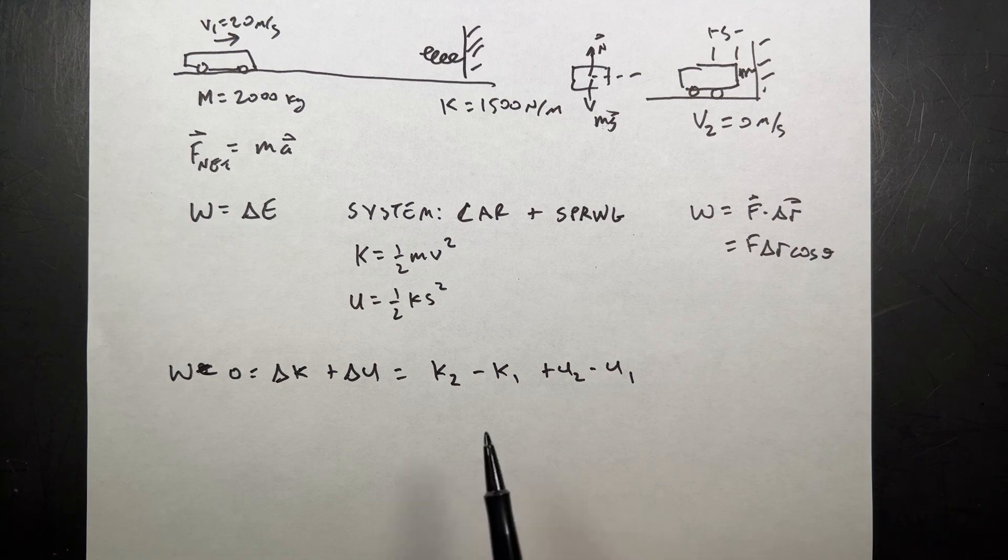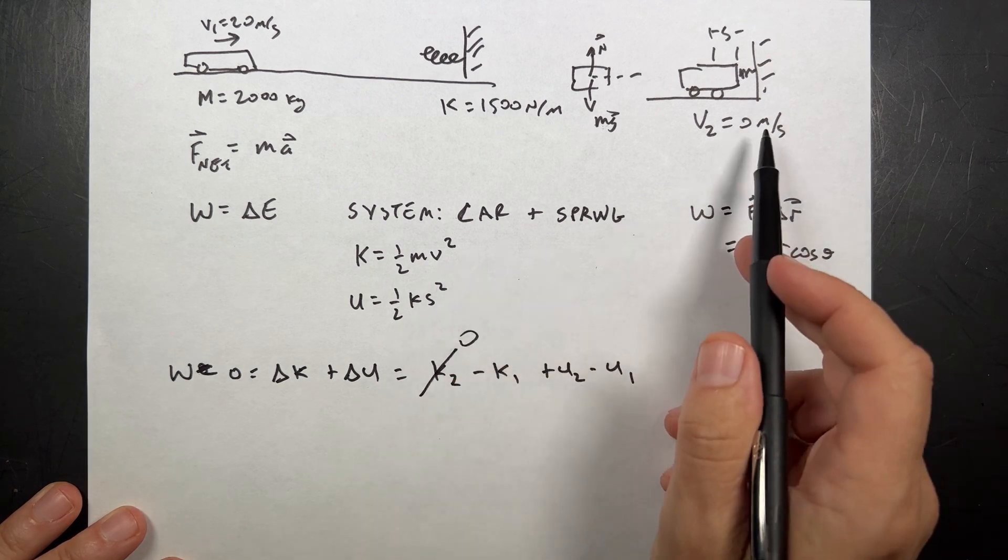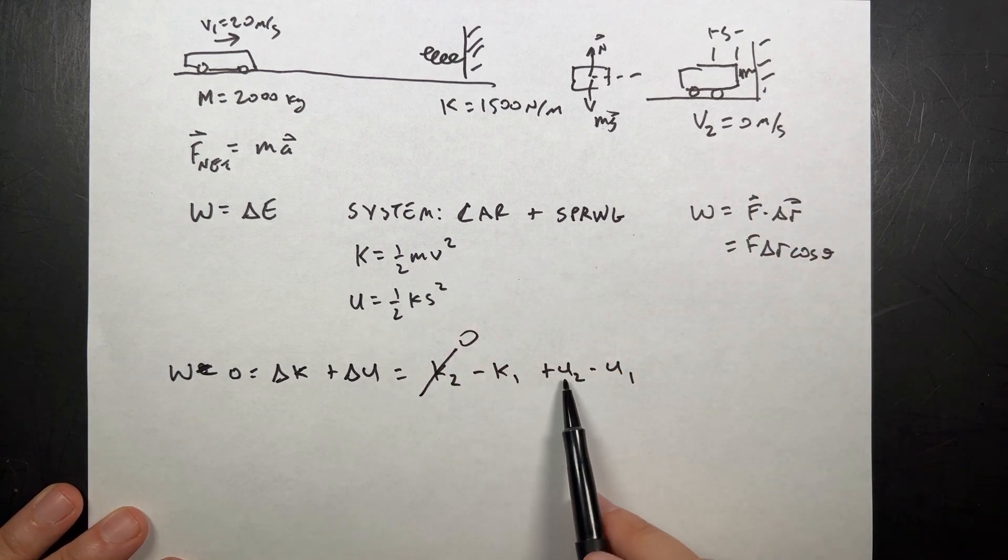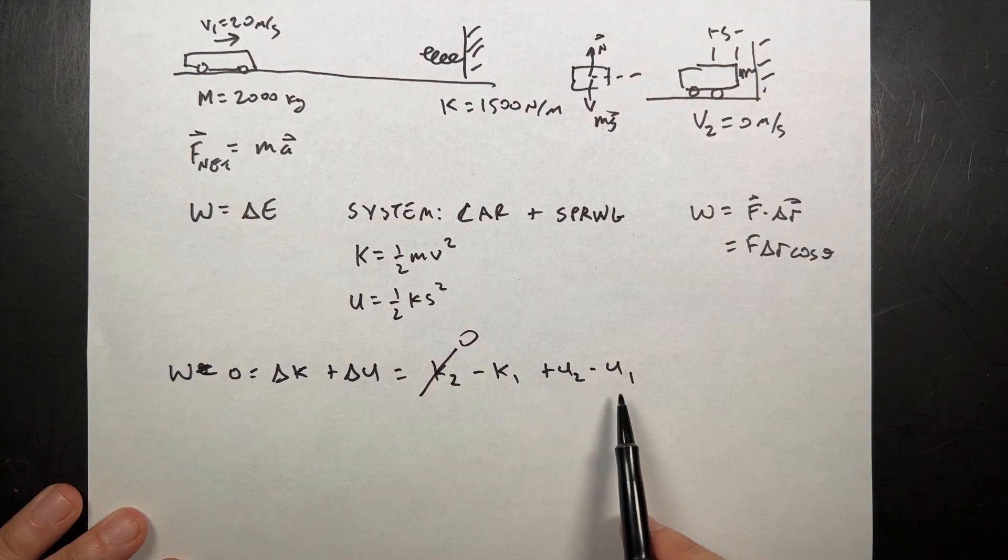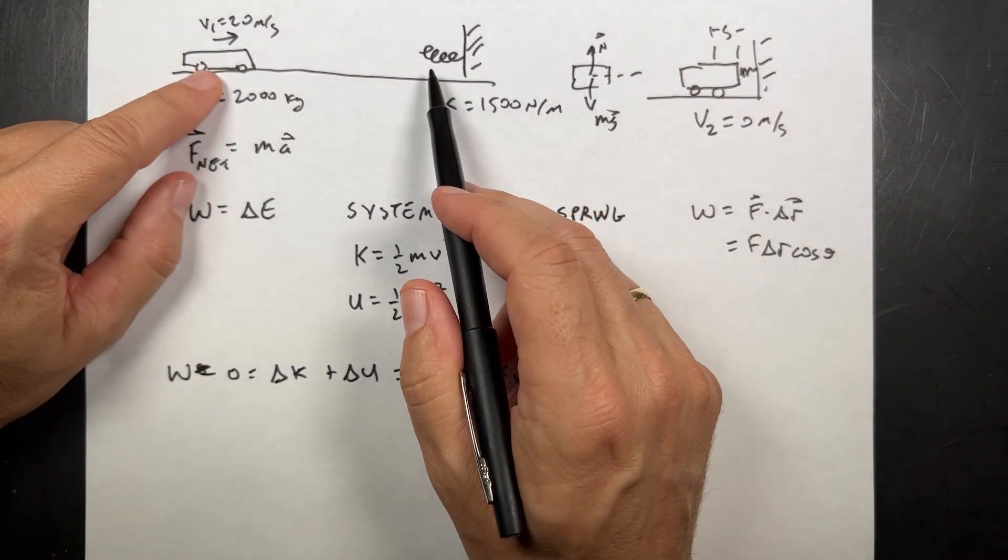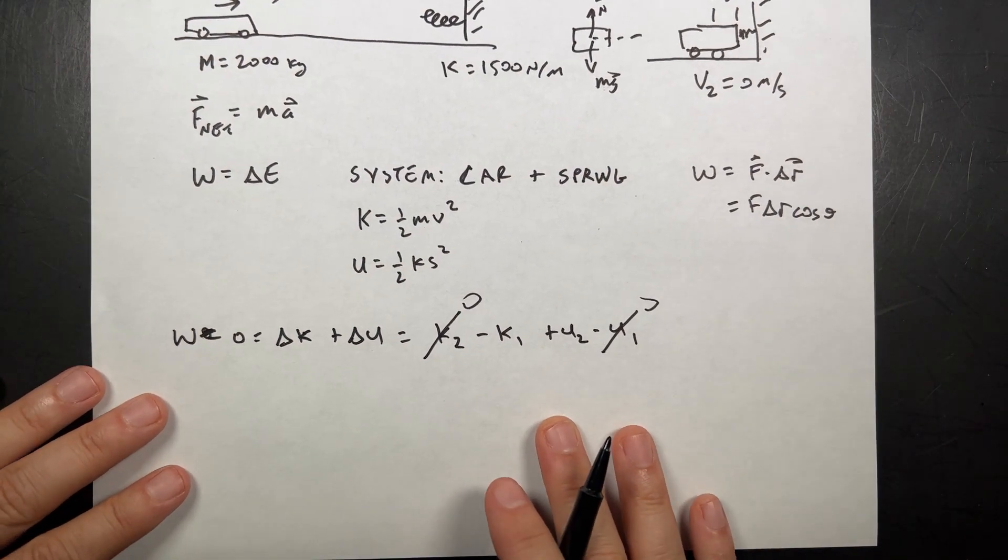Now two of those numbers are actually zero. This is zero. Since it stops, the final kinetic energy is zero. The initial is not. U2 is not zero, but u1 is zero. Because in this position, how much is the spring compressed or stretched? It's not. So, that's zero. That means we get the following equation.